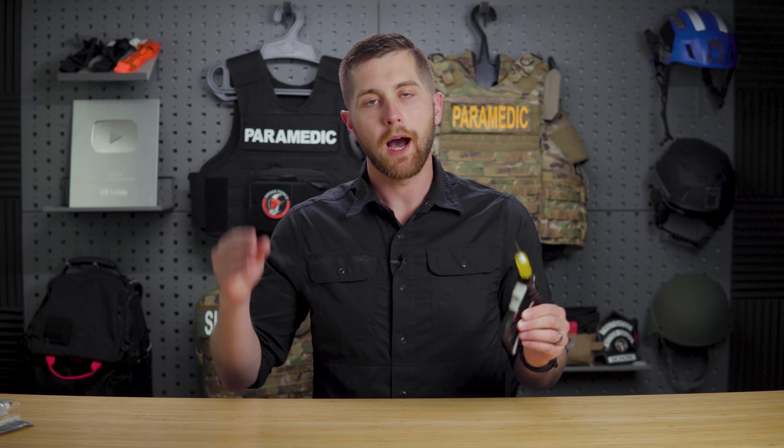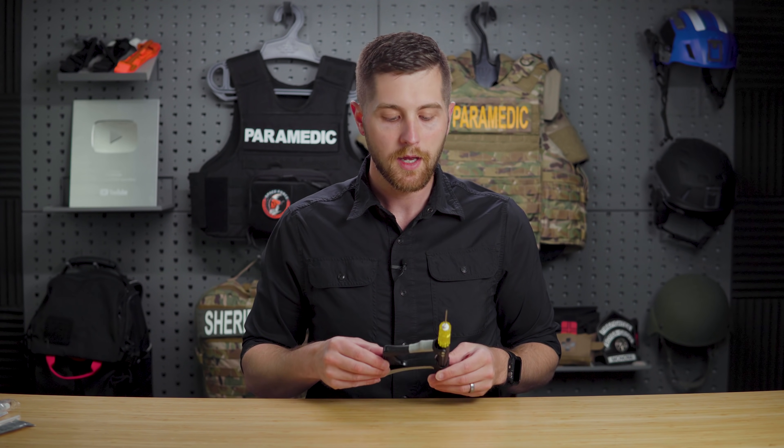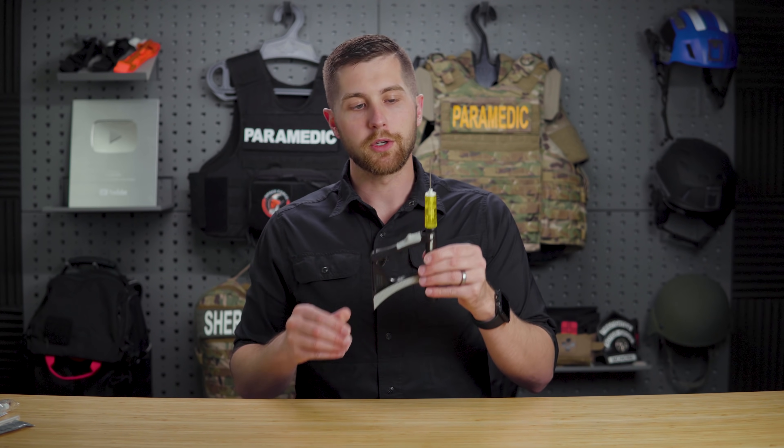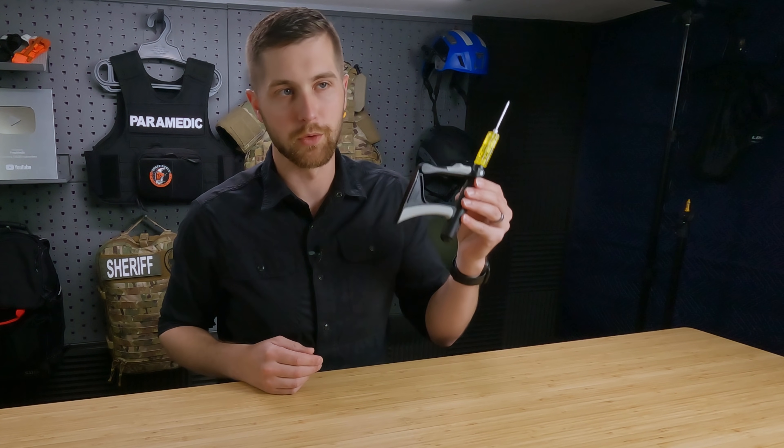A little bit of basic anatomy of the bone: the outermost layer is called the periosteum. Beneath that you have the intramedullary space, which is filled with bone marrow — this is where most of your blood production for your entire body comes from. Actually, 95% of your blood cells are produced in your bone. That's where we want to get this needle because it is highly vascular and very easy to get medication into circulation, which is why IOs work.